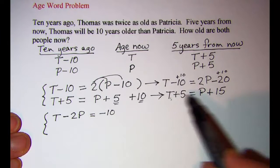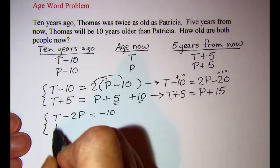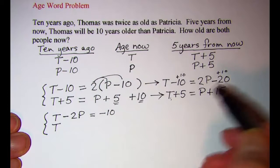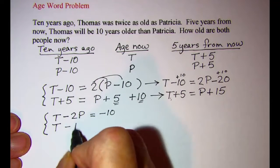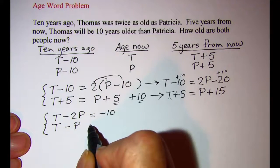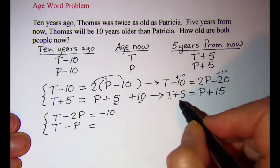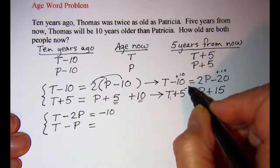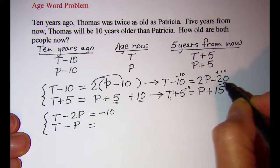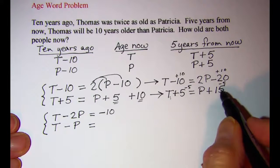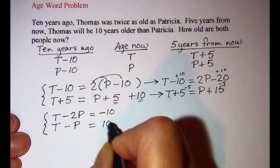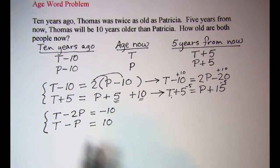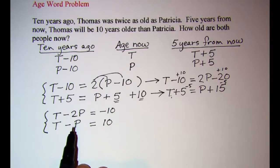For this equation, my T is already on the left, so I'll just copy it. Subtract P from both sides to move my P to the left, and then subtract five from both sides. So I have a fifteen subtract five is a positive ten.